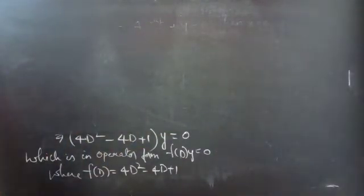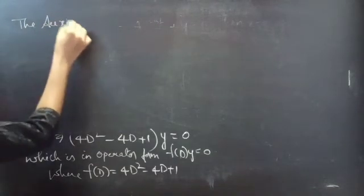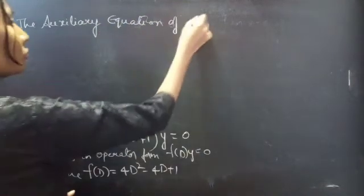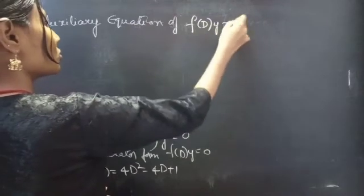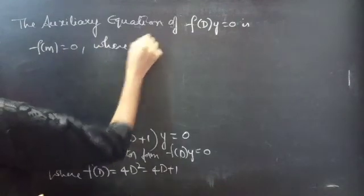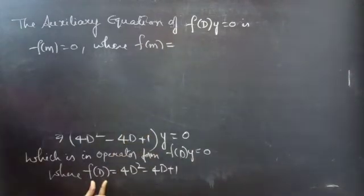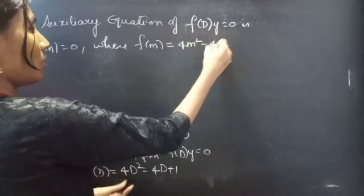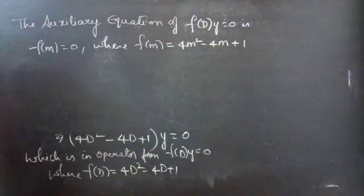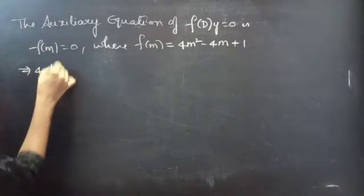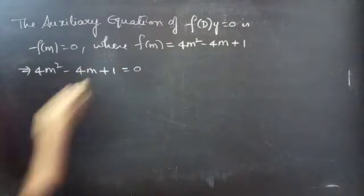The auxiliary equation of f(D) into y equals to 0 is f(m) equals to 0, where we replace the differential operator D by m to get f(m). Then you will get 4m² minus 4m plus 1. So our auxiliary equation will be 4m² minus 4m plus 1 equals to 0.